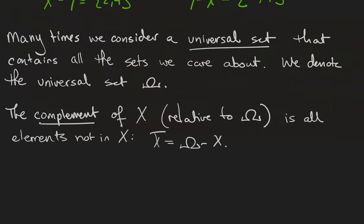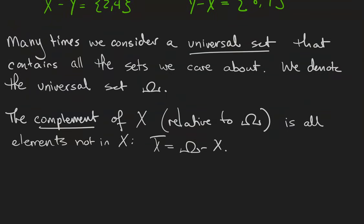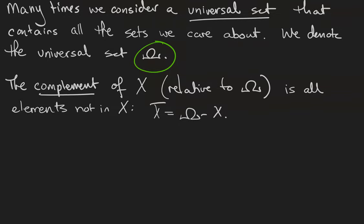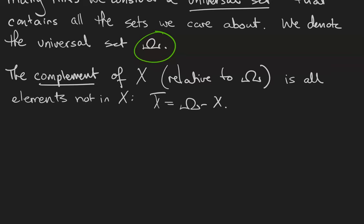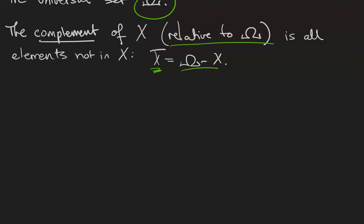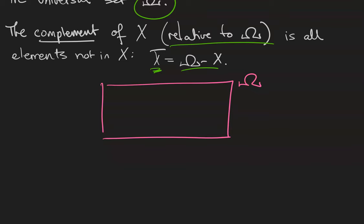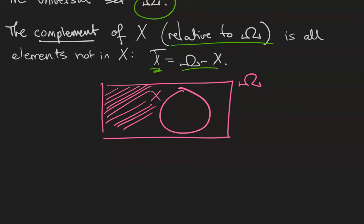A lot of times we talk about having a universal set that contains all the sets we care about. The universal set is sometimes denoted with the capital Greek letter omega. If we're thinking about a universal set, we can talk about the complement of a set. The complement of x, relative to the universal set, is the set of all elements that are not in x — in other words, the complement of x equals omega minus x. In the Venn diagram, if the rectangle represents omega and the circle is x, then x complement is everything outside the circle.